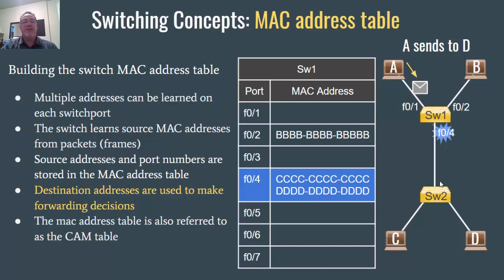Let's look at our bullet points. Building the switch MAC address table: multiple addresses can be learned on each switch port. You can see that Switch1's MAC address table has learned two MAC addresses on port 4 — it knows that to reach host C and host D on S1, you go out port 4. Both MAC addresses are associated with port 4.